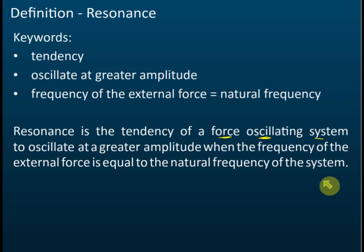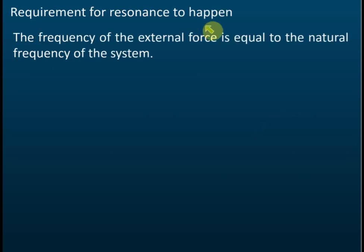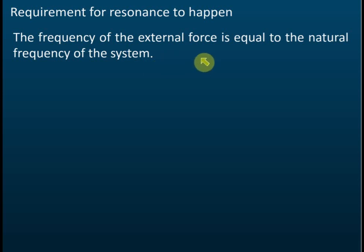Resonance is caused by forced oscillations — you must have an external force. When the frequency of the external force is equal to the natural frequency, the object will start to vibrate or oscillate with greater and greater amplitude. The requirements for resonance to happen are: it must be a forced oscillating system, and the frequency of the external force must equal the natural frequency of the system.